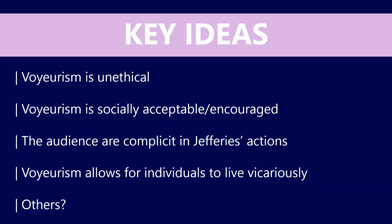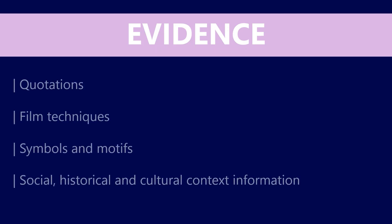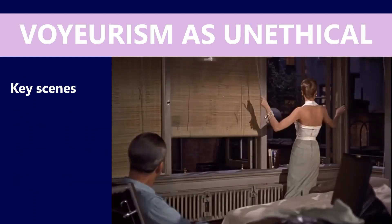There are of course many others you could look at — one potentially being that voyeurism is dangerous or comes with dangerous consequences, that acting unethically leads to punishment. When it comes to finding evidence from the film, there are a few things you should be collating: quotations, film techniques, symbols and motifs, and of course social, historical and cultural context. This shows the examiner you have a knowledge of the world of the text and understand wholeheartedly that this is an American film set in the 1950s during the height of the Cold War and McCarthyism.